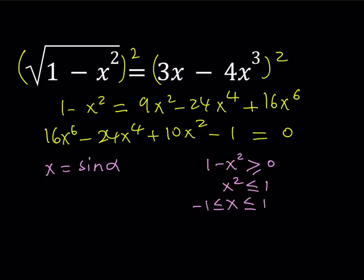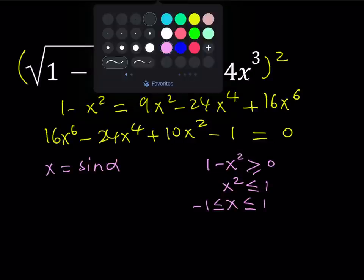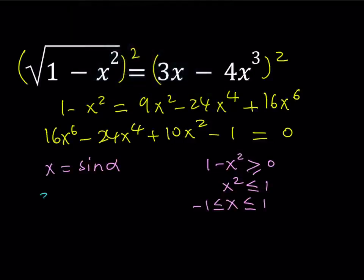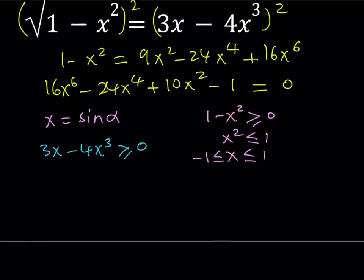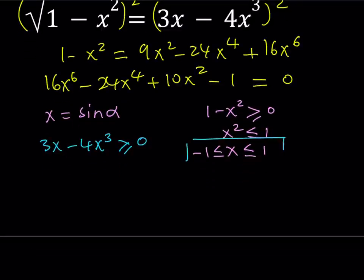But not only that, we also have another condition. Because our radical equals a cubic expression, that cubic expression — the result of the square root — should not be negative either. So we can also say that 3x minus 4x cubed needs to be greater than or equal to 0. We can factor out x, which gives us x times (3 minus 4x squared) ≥ 0.